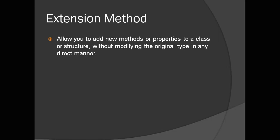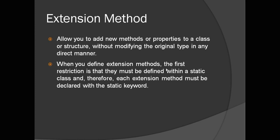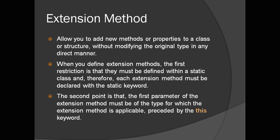Now let us see how to create an extension method in C#. The first restriction is that you must define it within a static class — your class must be static. And since your class is static, all methods inside it must also be static, so your extension method must be static. The second point is that the first parameter of the extension method must be of the type for which the extension method is applicable, and it must be preceded by the 'this' keyword.